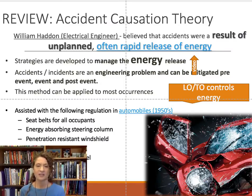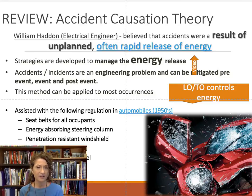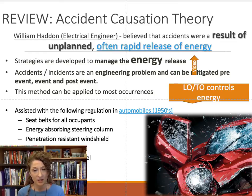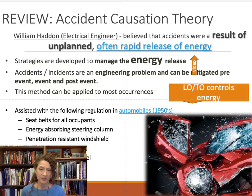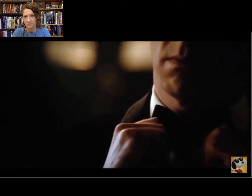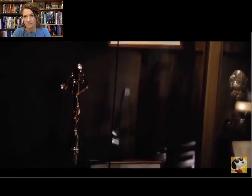We're talking about energy, so let's review accident causation theory. Accidents or injuries happen because of an unreleased, unplanned for, rapid release of energy. If we use Haddon's strategies to control this release of energy, we can prevent accidents and injuries from happening. This is an example of another quick and sudden release of energy.